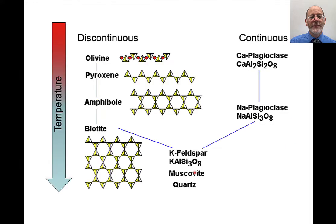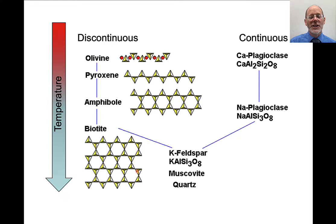Just to recap the discontinuous side: olivine is an orthosilicate (island silicate), then pyroxene (single chain), amphibole (double chain), biotite (sheet silicate). Then the tectosilicates include muscovite, also a sheet silicate, and continue from there.